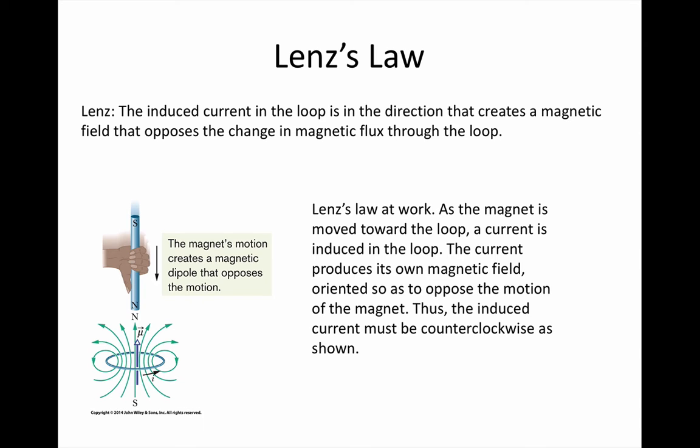Another way you can think about it is that the induced magnetic field must be making it harder to move the magnet closer. The way it does that is to create a magnetic field with the north pole upwards, nearest the permanent magnet. Then the induced north pole repulses the approaching north pole and makes it harder to move the magnet.